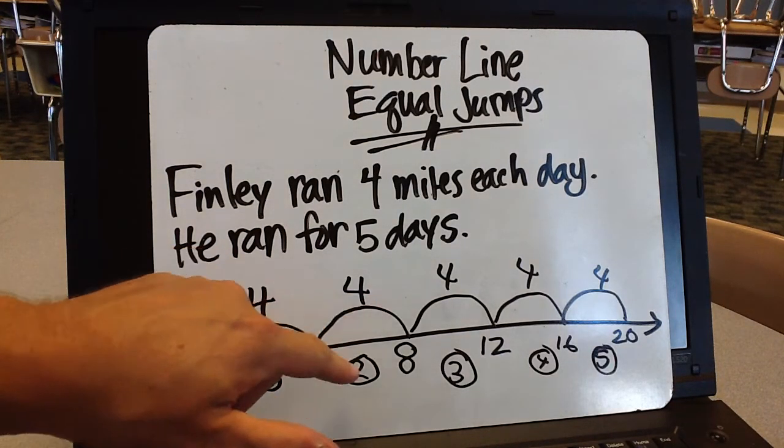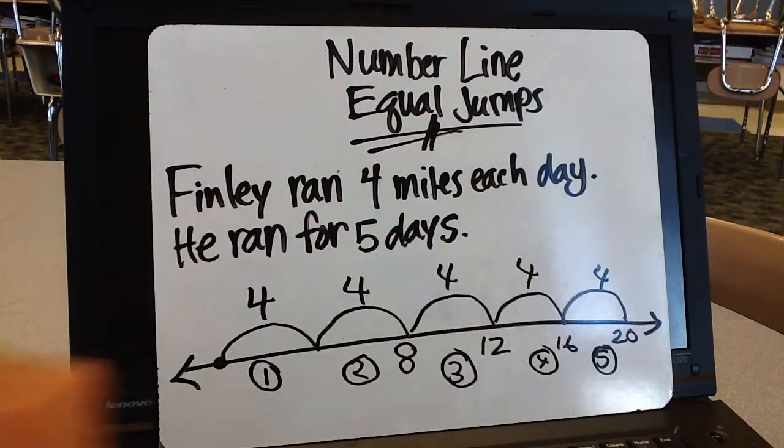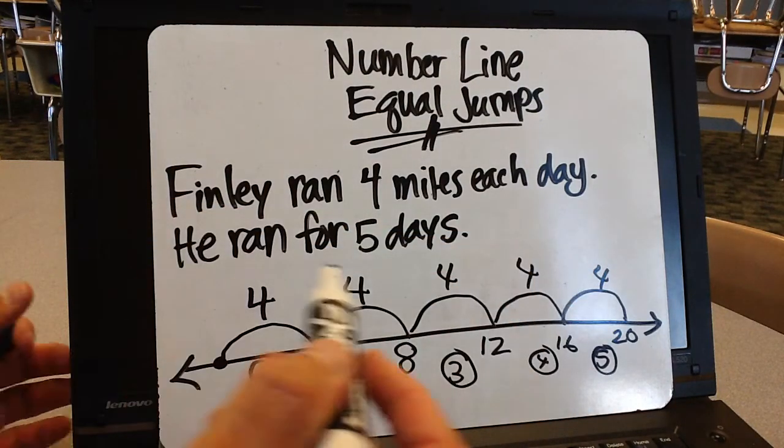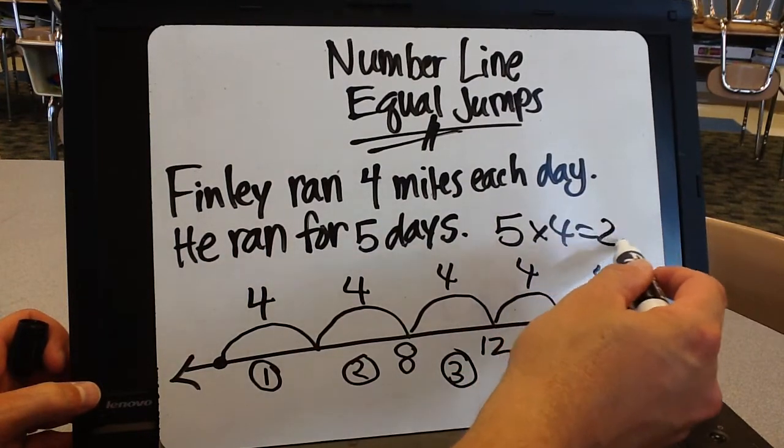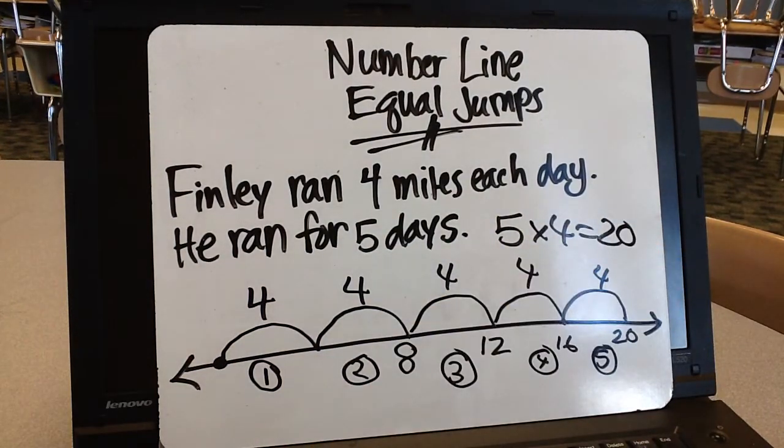You can see the jumps are equal four, four, four, four, and four. As a multiplication problem, this would be five times four equals twenty. And that's how we use a number line with equal jumps to solve a multiplication problem.